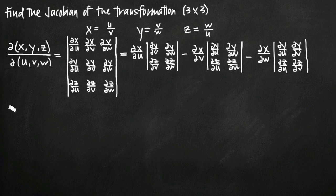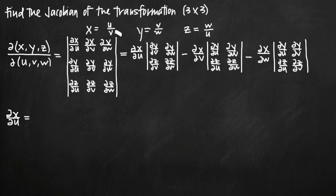The first thing is to take the partial derivatives of x, y, and z in terms of u, v, and w one at a time. The partial derivative of x with respect to u — notice that x equals u over v. If we're taking the partial derivative with respect to u, we treat v as a constant. So the derivative of u over v is just 1 over v, since we can think of x as x equals 1 over v times u, where 1 over v is just a coefficient.